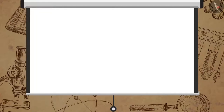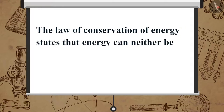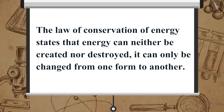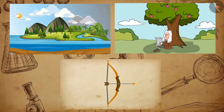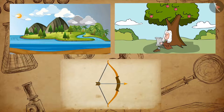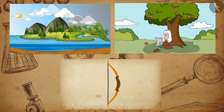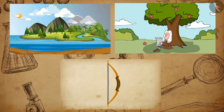The Law of Conservation of Energy states that energy can neither be created nor destroyed. It can only be changed from one form to another. This law is applicable in all situations and in all kinds of energy conversions.